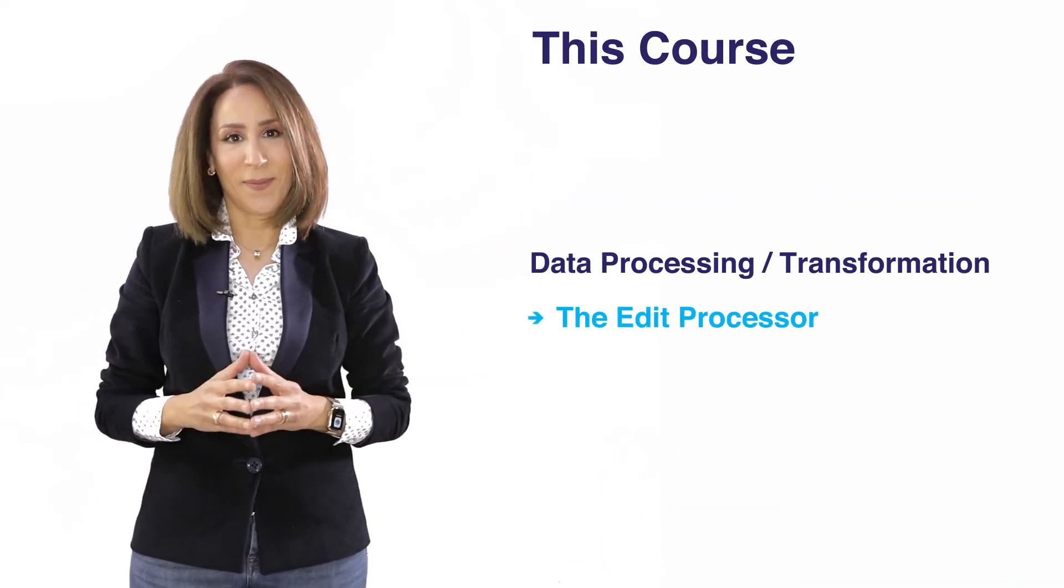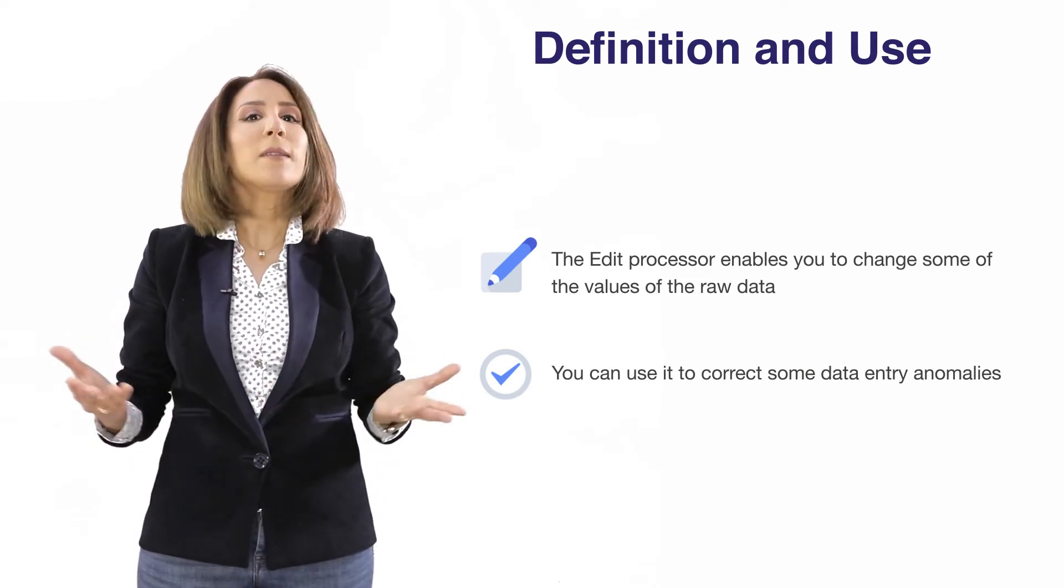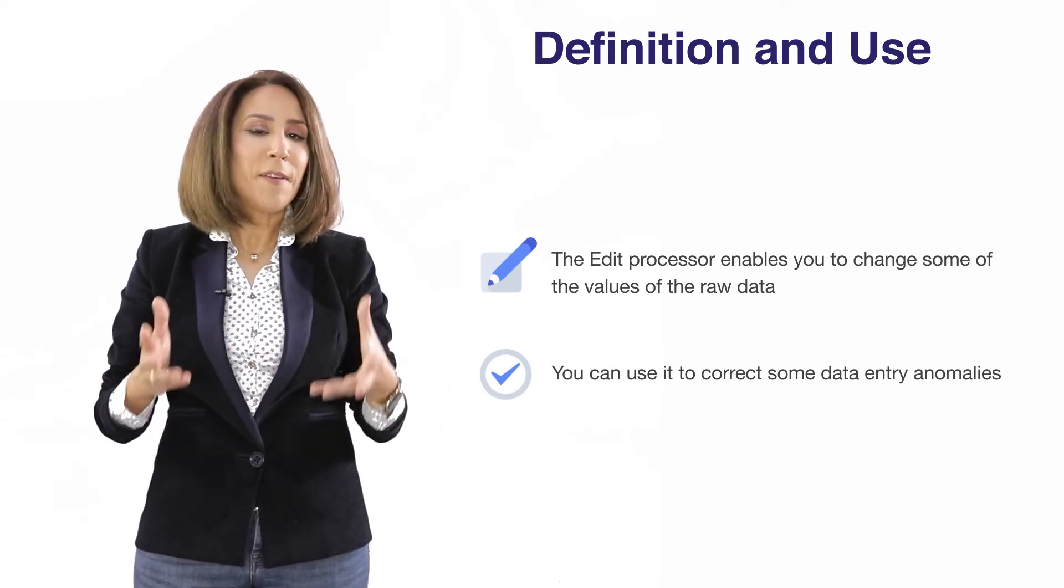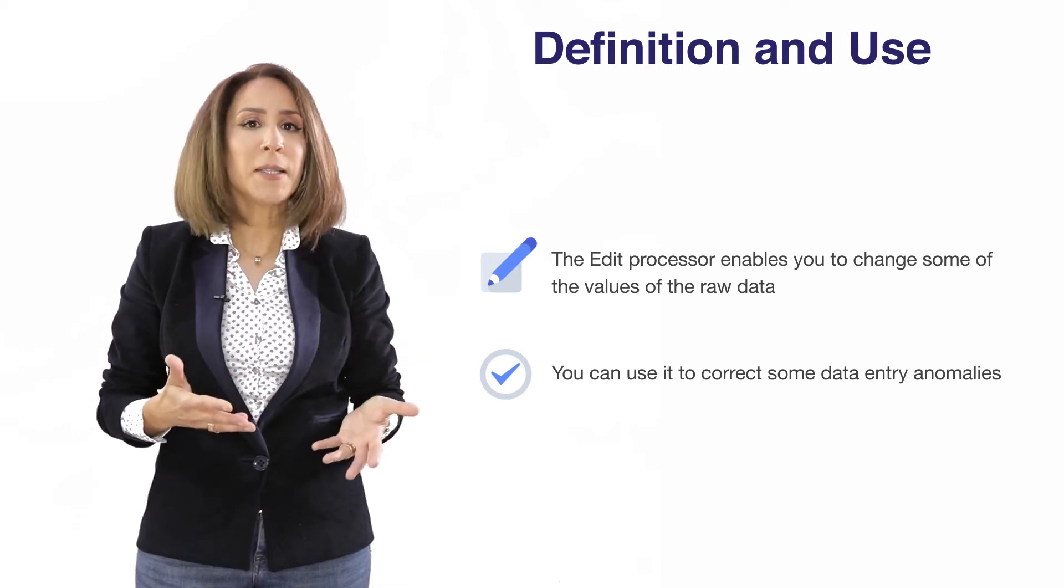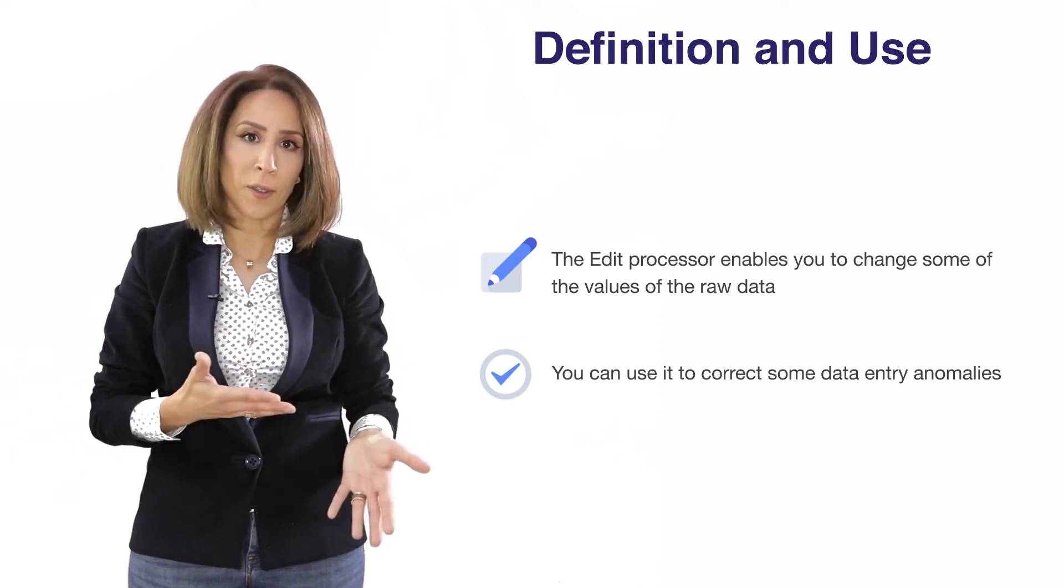The edit processor. This processor is pretty much straightforward. It consists of replacing some values in your original data sets by other values because we think that the new values are more suitable for your context.